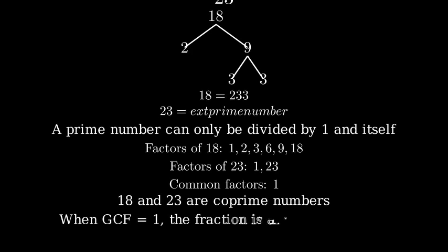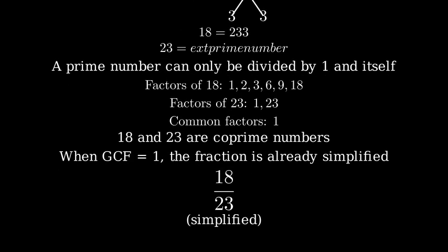When the greatest common factor between the numerator and denominator is 1, this means the fraction is already in its simplest form. Therefore, 18 over 23 cannot be simplified any further.